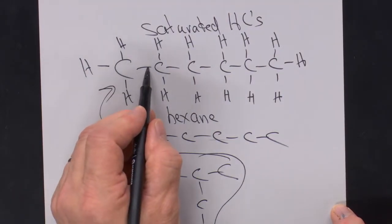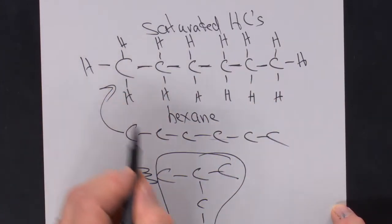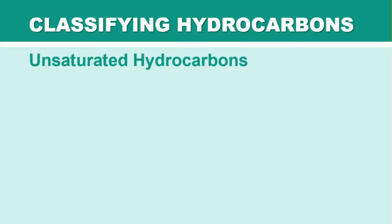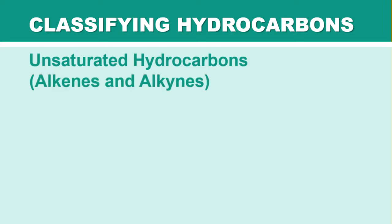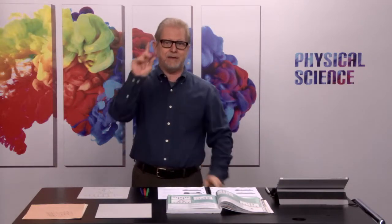We call alkanes saturated hydrocarbons because every bond other than the C-C single bonds goes to hydrogens — they have the maximum number of hydrogens possible. Now, unsaturated hydrocarbons are the alkenes and alkynes. Just like alkanes use the prefix and suffix '-ane', alkenes use '-ene' and alkynes use '-yne'.